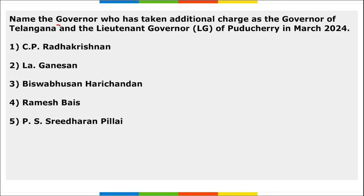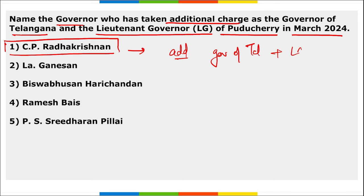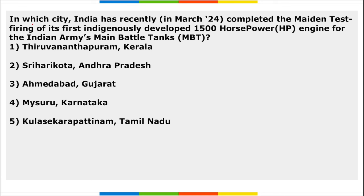CP Radhakrishnan has taken additional charge as the Governor of Telangana and Lieutenant Governor of Puducherry in March 2024.